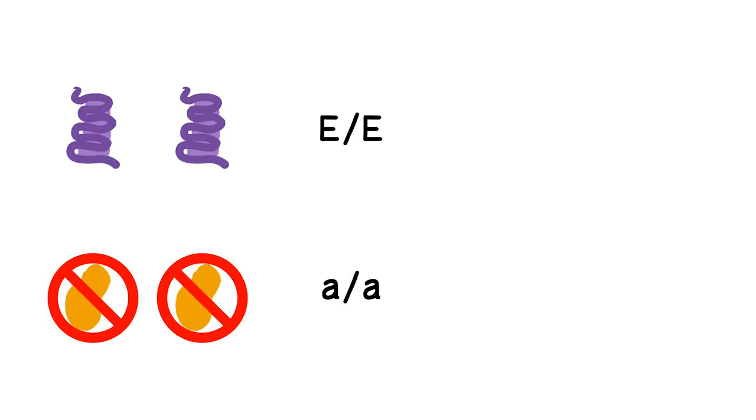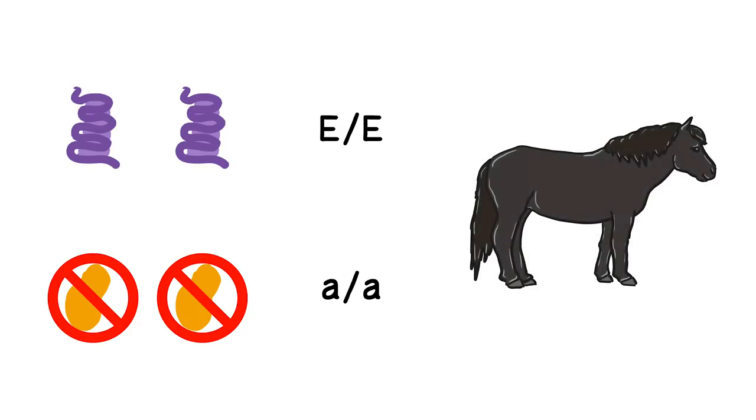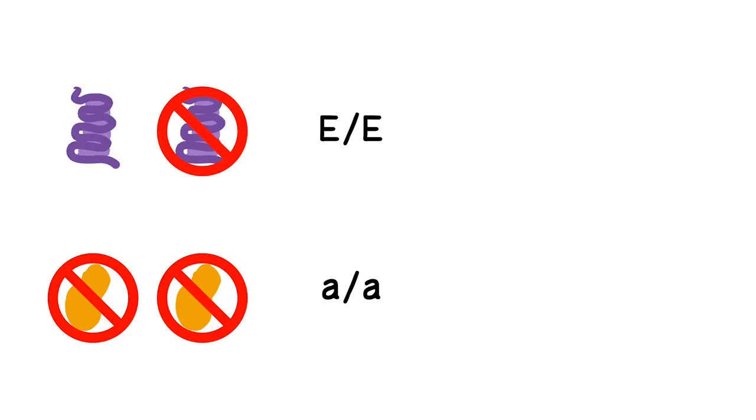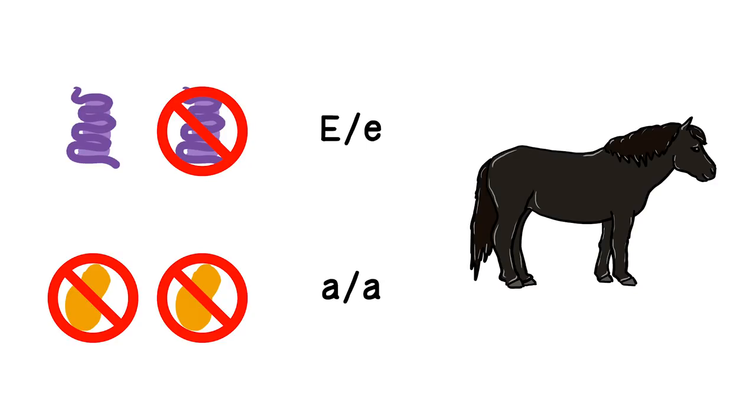The next case is a horse with two good copies of MC1R or E, but no working ASIP. As we saw earlier, without ASIP, alpha-MSH keeps binding to the receptor and thus telling the cell to make black. There is nobody around to switch back to red, so the horse will be all black. It doesn't matter if one of the two E alleles is broken, this horse still has receptors that receive the alpha-MSH signal for black, so the horse is still black.